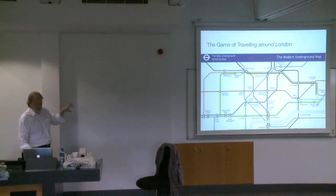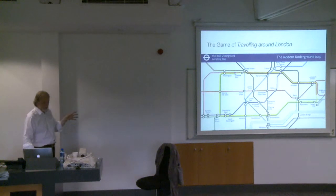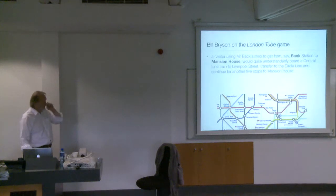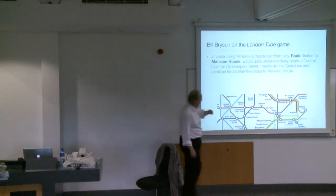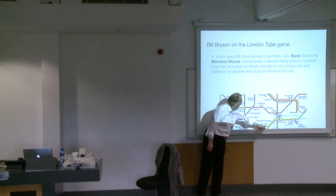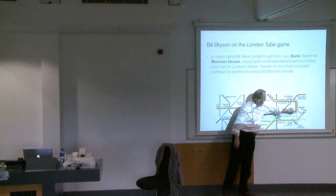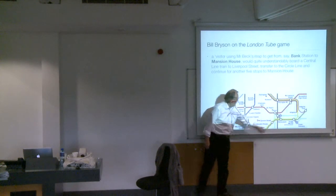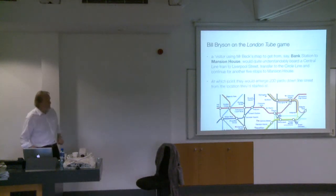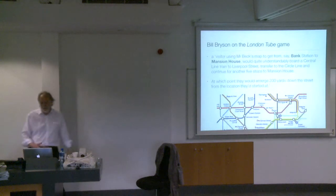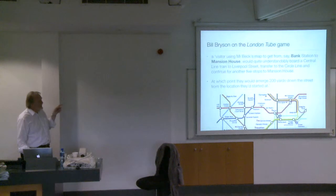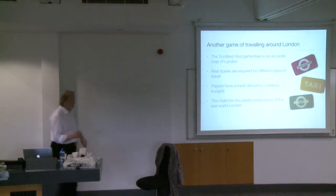Being an electrical circuit draftsman, Beck took the idea of colored wiring as a way of coloring the lines, so a lot of things came together. It's a brilliant design and has been copied, but of course it's completely inaccurate. Bill Bryson makes the point that if a visitor uses this map to get from Bank station to Mansion House, they'd take the train up and around on the Circle line — and find themselves 200 yards from where they started. It's useless for navigating above ground.